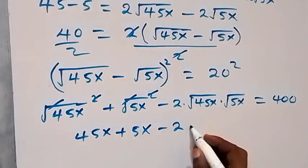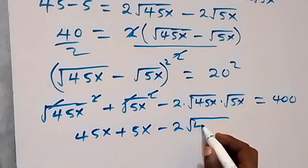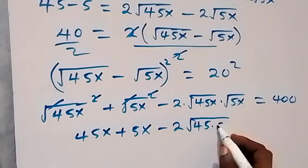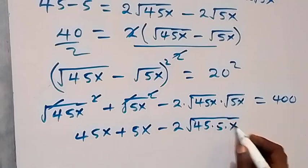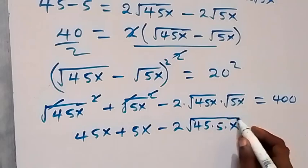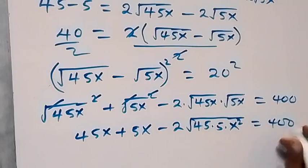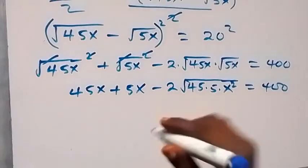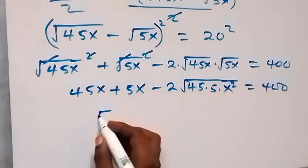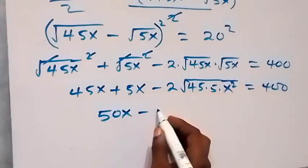Bringing the terms together, we get root 45 times 5 times x squared, which equals 400. We can simplify root 45 times 5 as root of 225 times x squared.